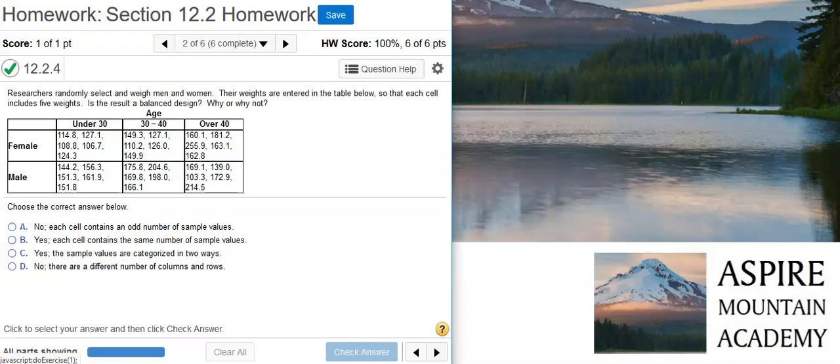Here's our problem statement. Researchers randomly select and weigh men and women. Their weights are entered in the table below so that each cell includes five weights. Is the result a balanced design? Why or why not?